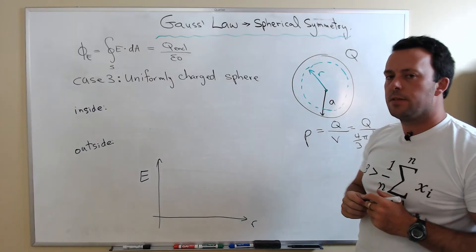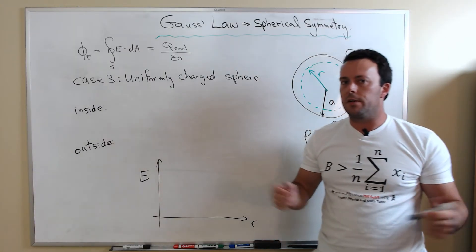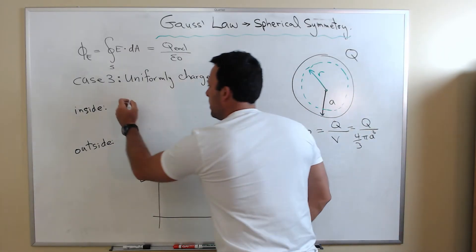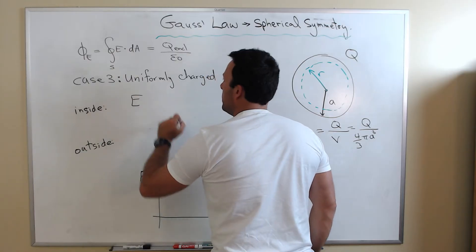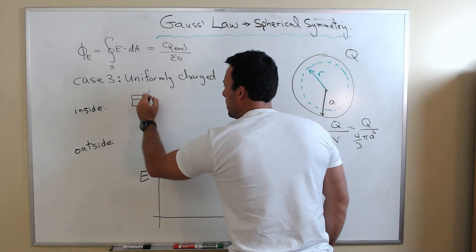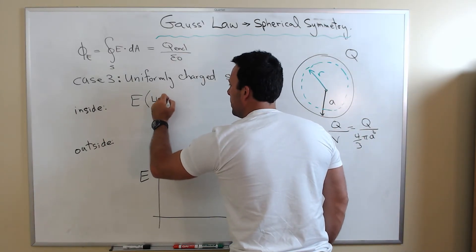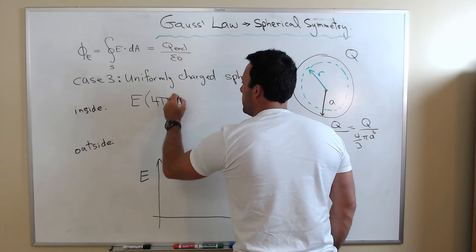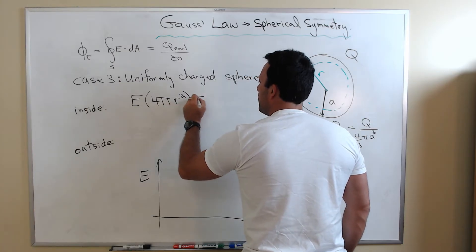The left-hand side of Gauss's Law is always the same for spherically symmetric objects. We're going to have E multiplied times the surface of this Gaussian surface. The total area is 4 pi R squared.